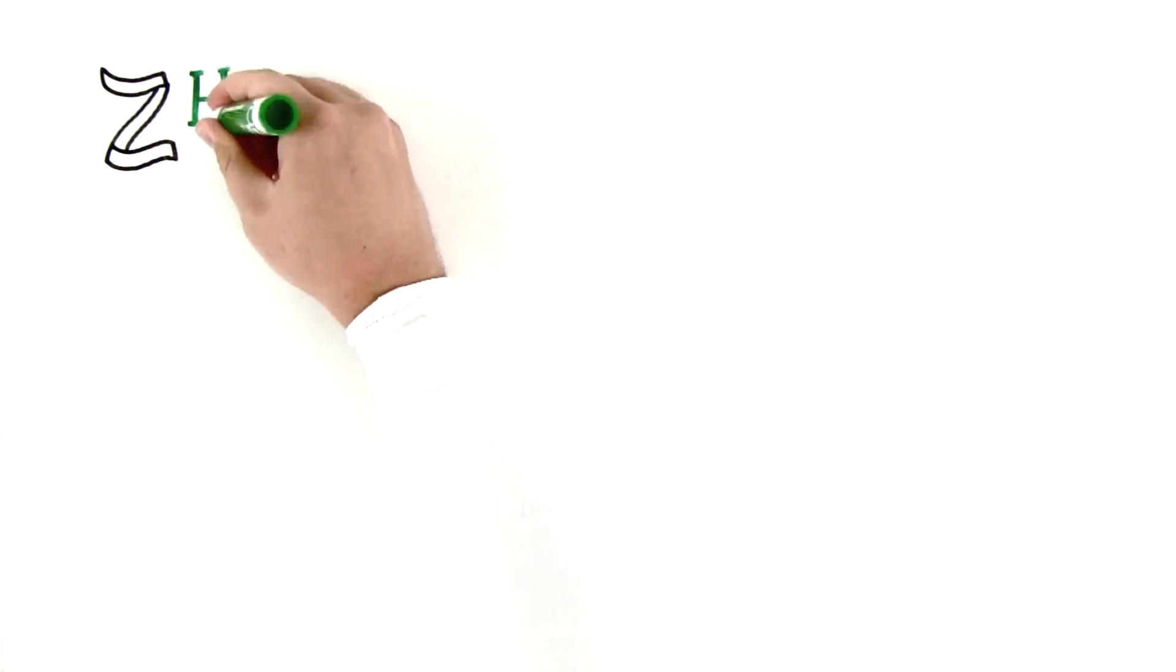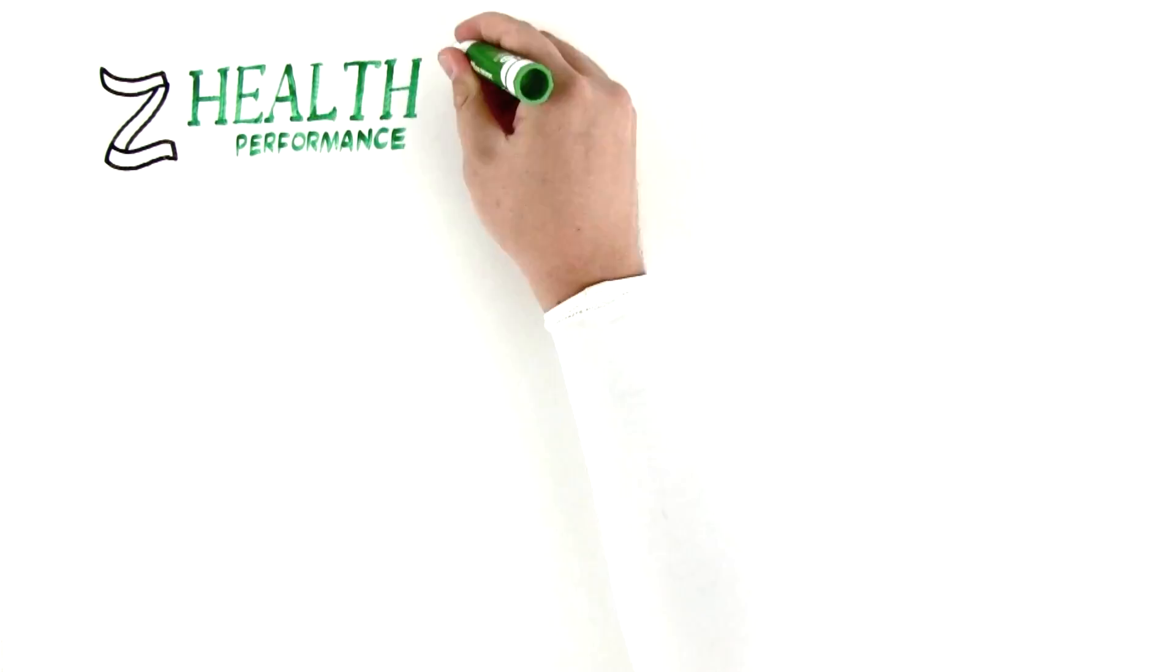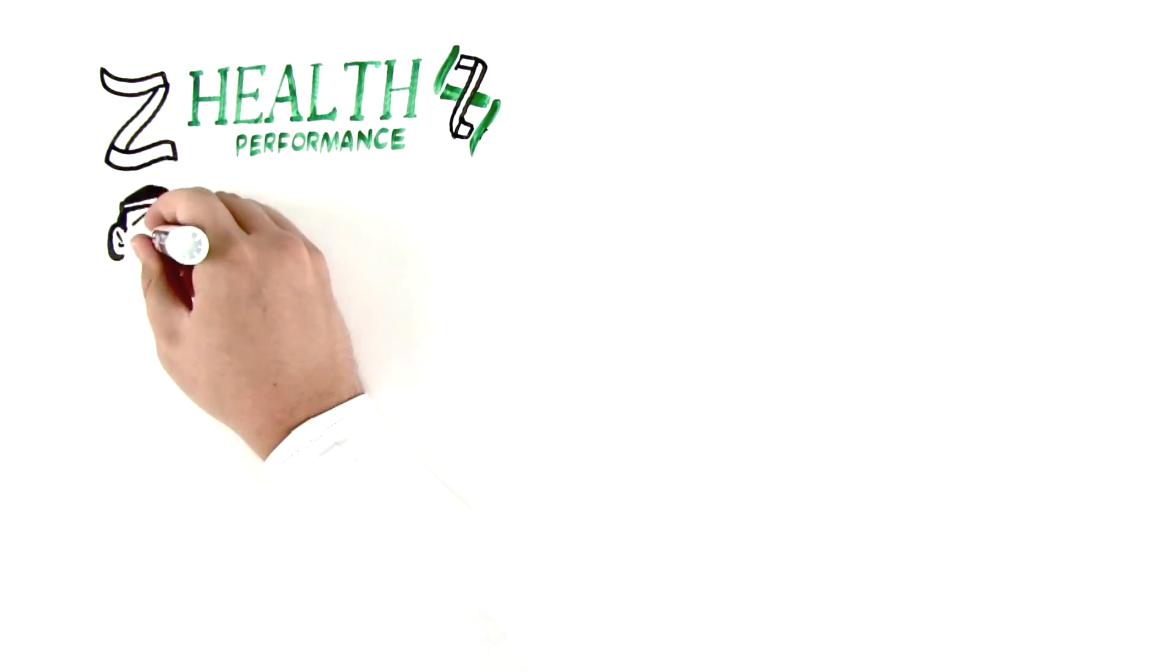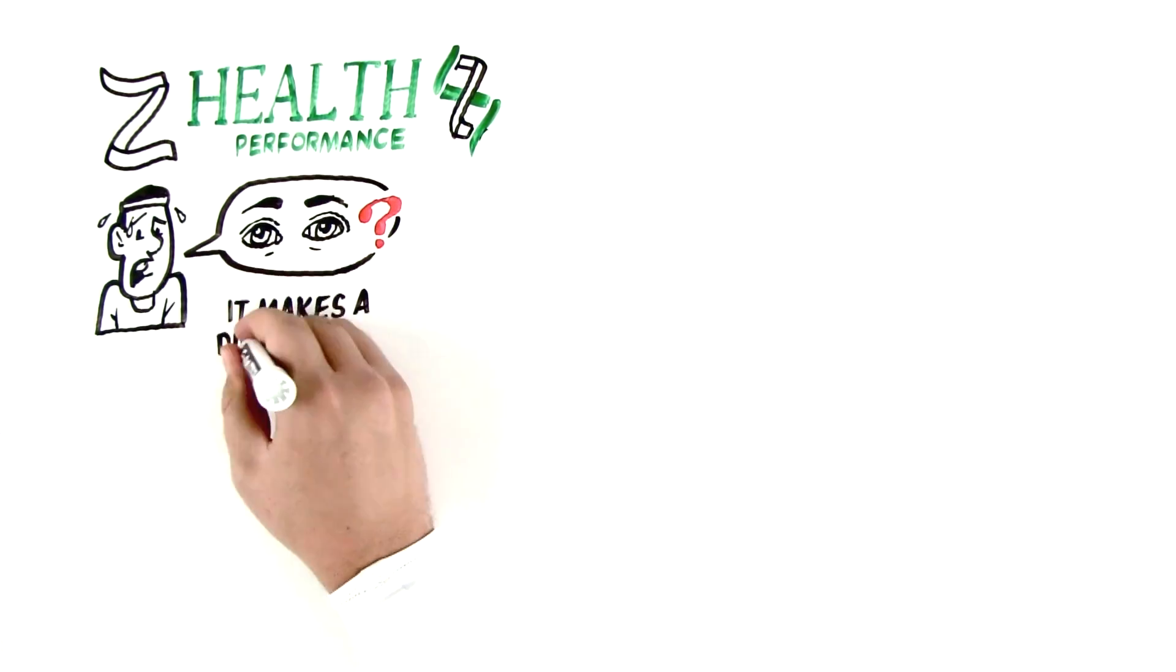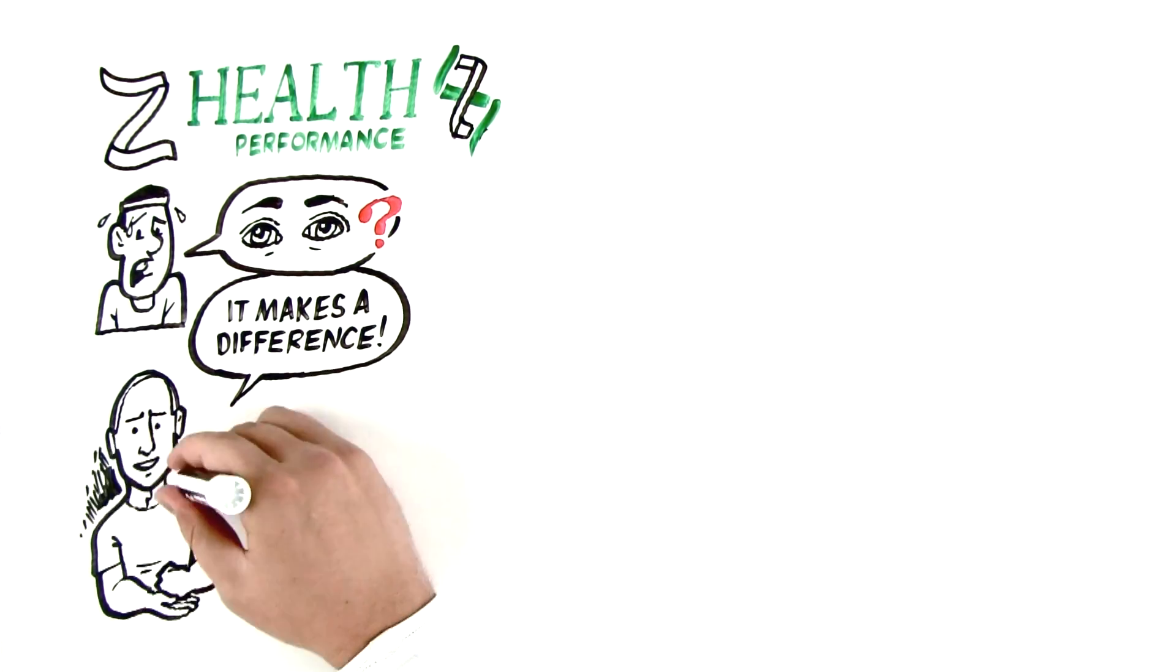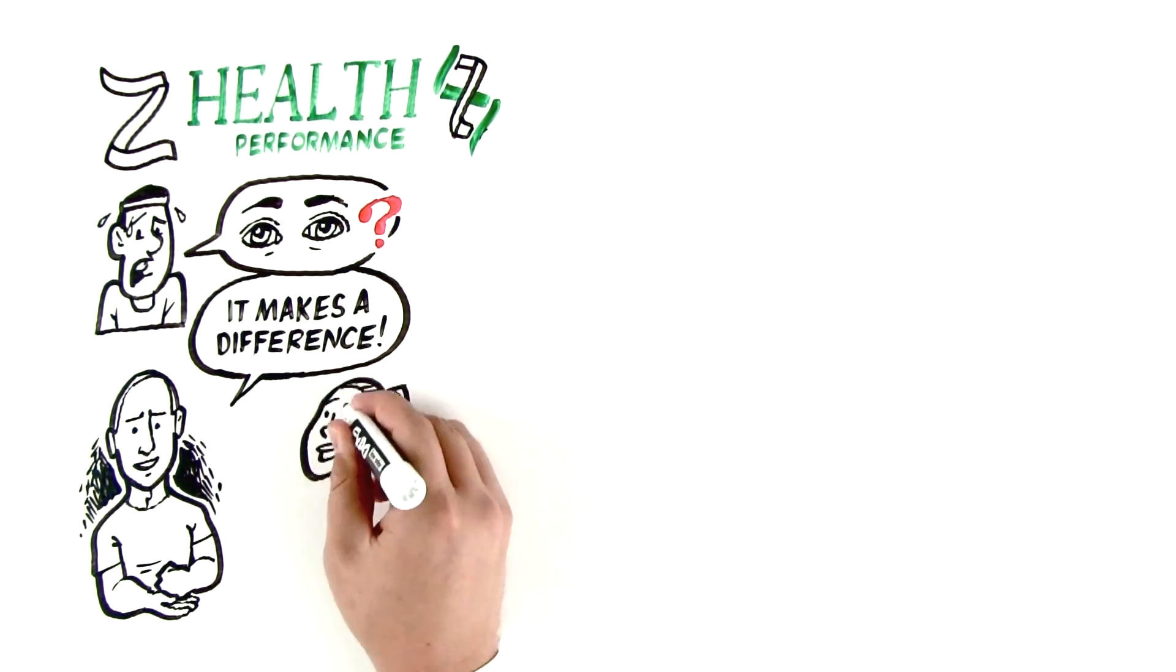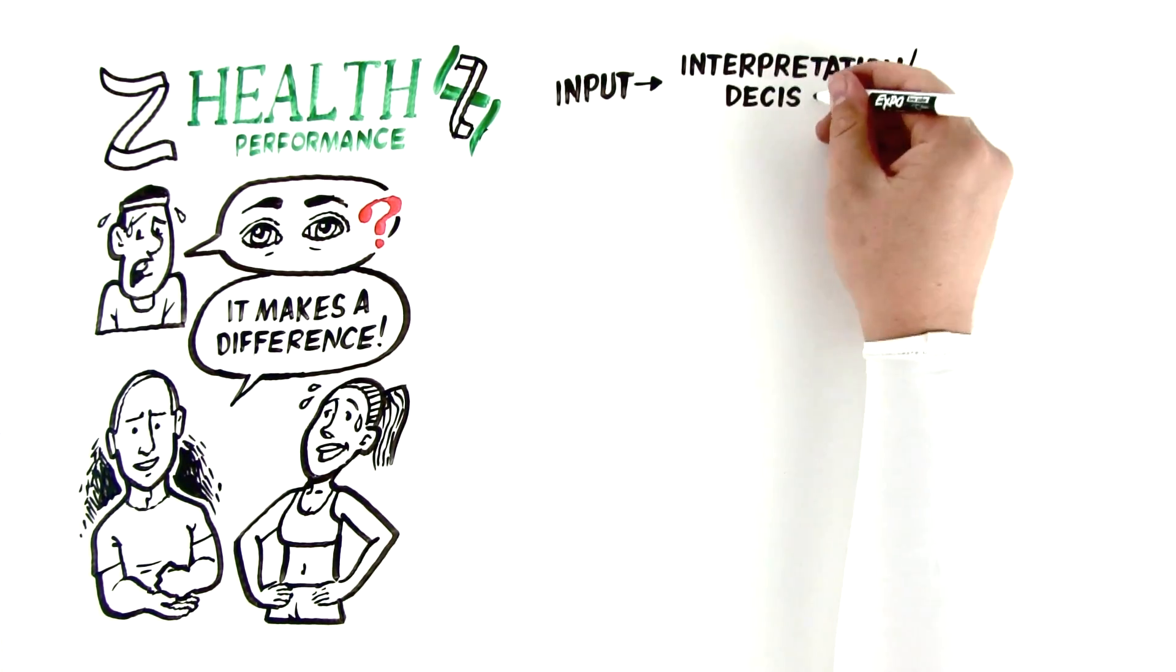So whenever you start thinking about Z-Health and you read or hear about all the stuff that we do in a training environment, because this is where people go, why are trainers talking about the eyes? Because it makes a difference in sports performance. Because it makes a difference in the gym. Because it makes a difference in pain. It makes a difference in rehabilitation. Everything that we do is based off of this basic concept of input, interpretation, decision, and output.